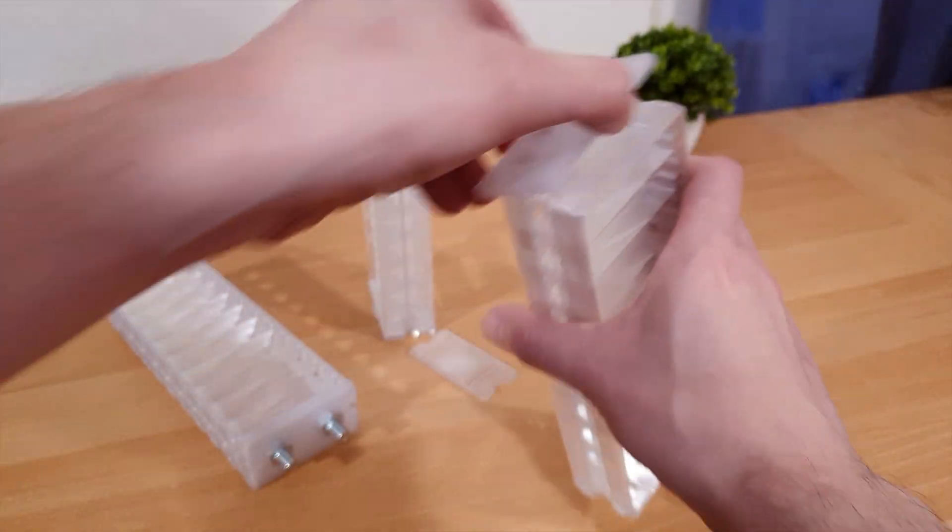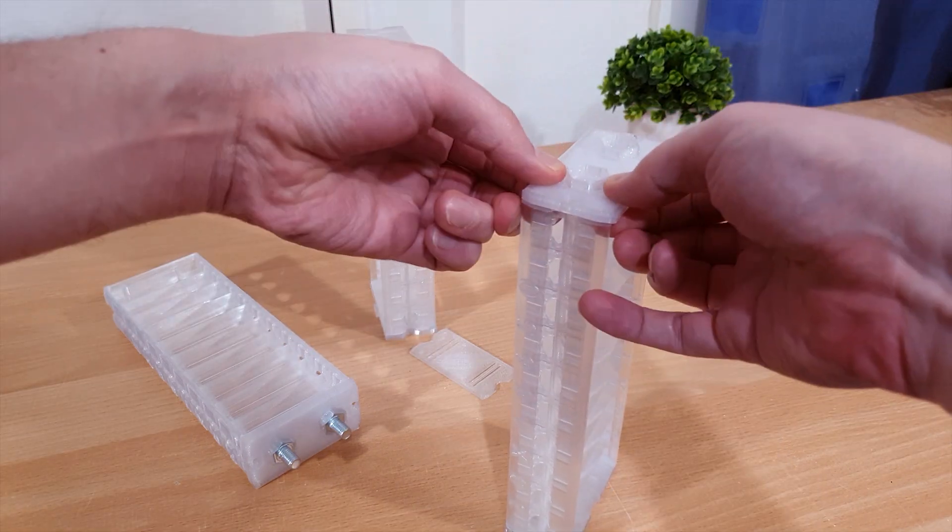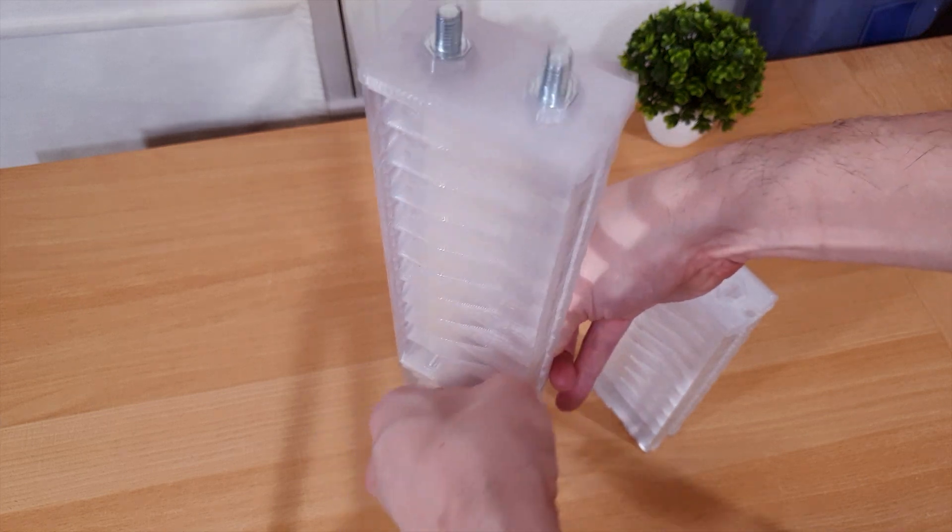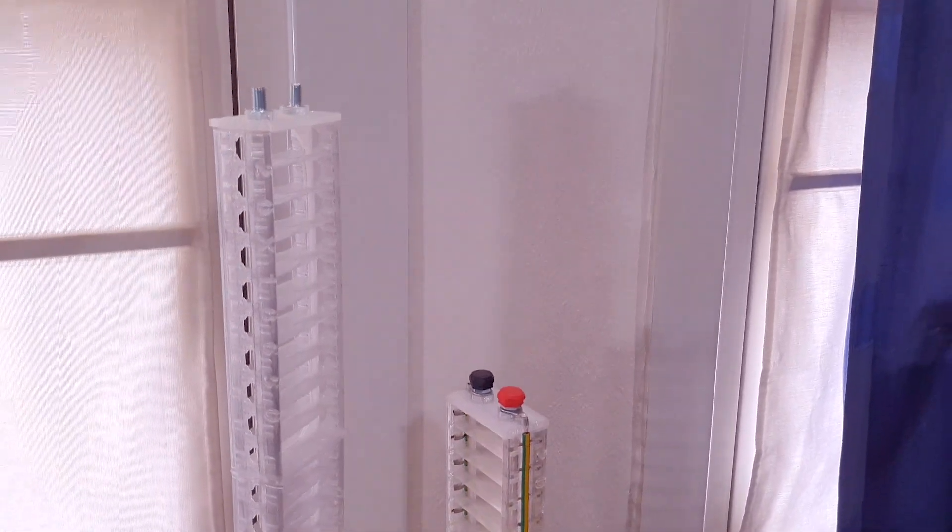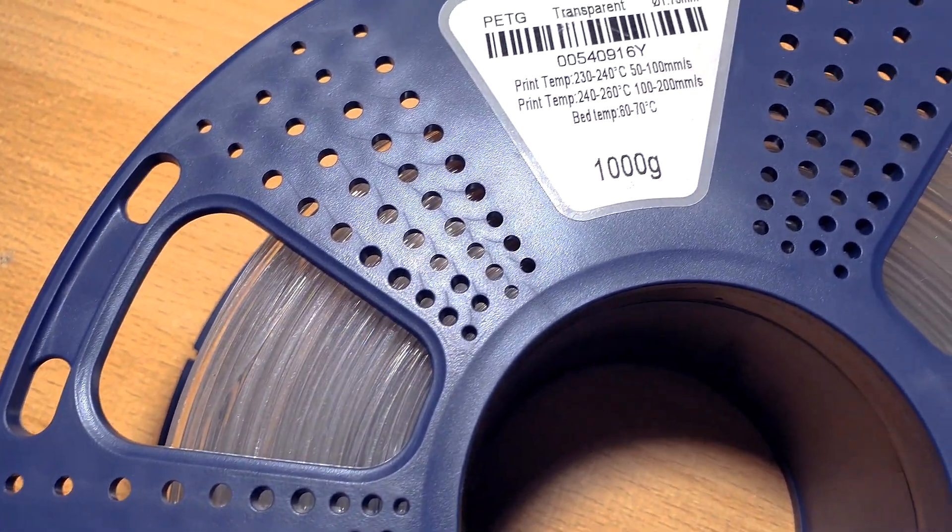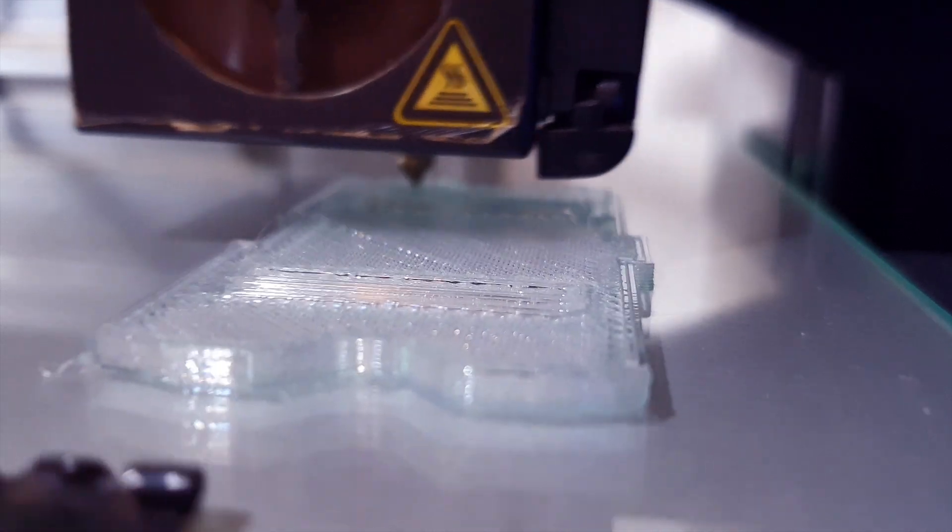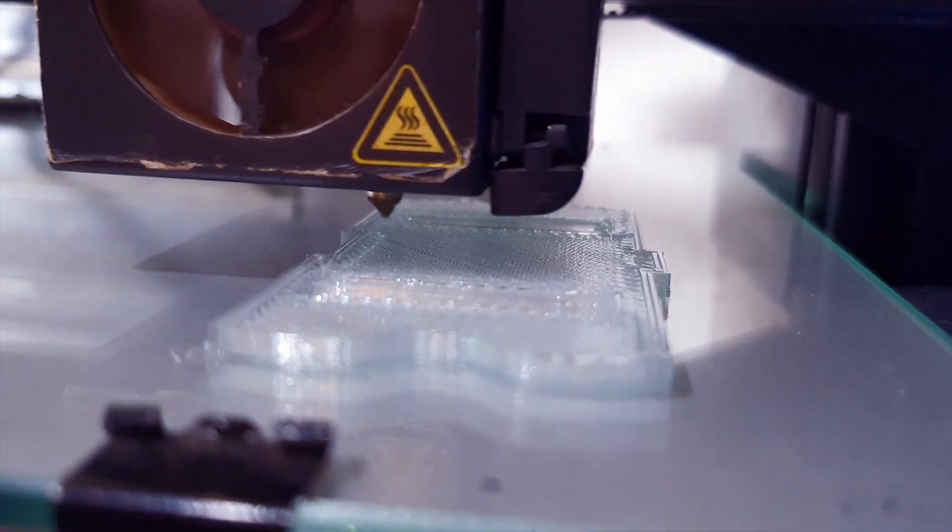Next the end caps go on. They just click on with these little slots. I made the slots double so you can have this mid cap that lets you stack the trays to any length you desire, though any more than two trays tall and it becomes unwieldy.